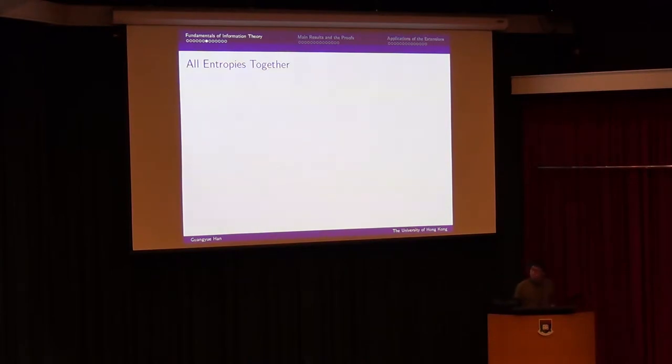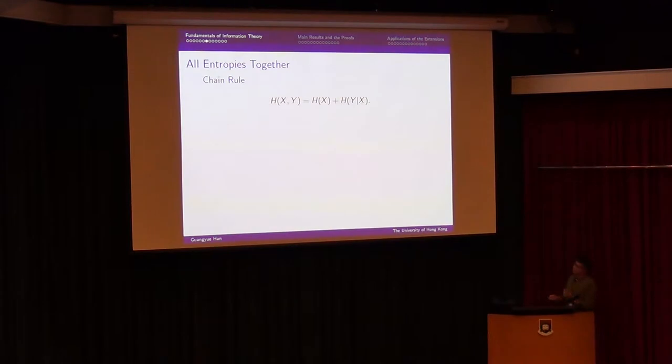It turns out the joint entropy and the conditional entropy are connected by the so-called chain rule, and this chain rule actually follows from the chain rule of probability theory.